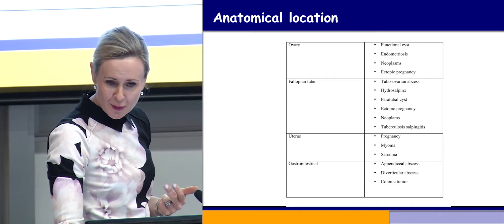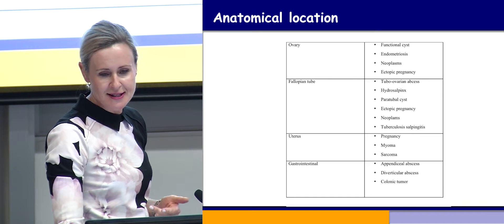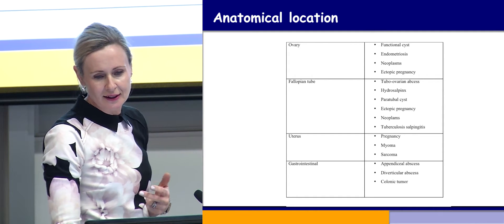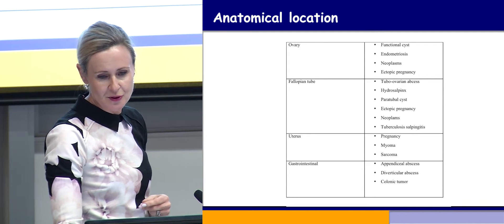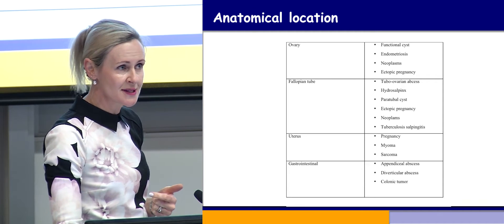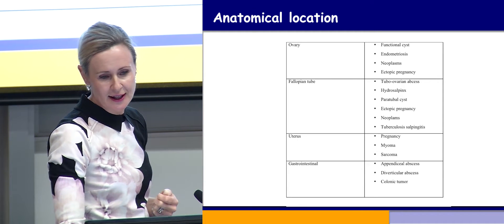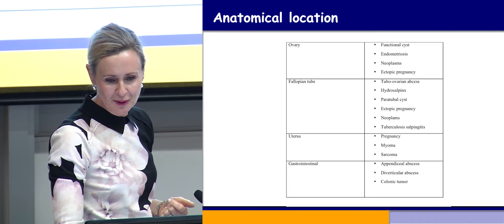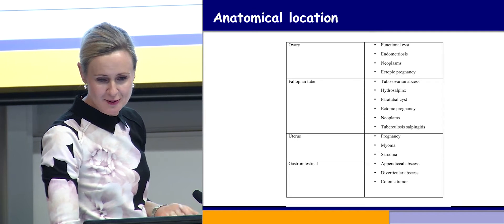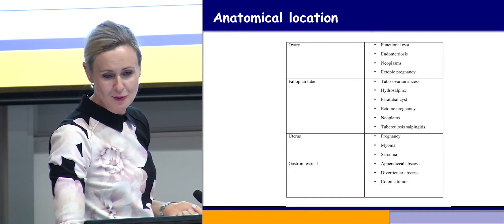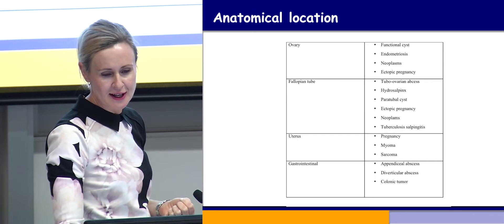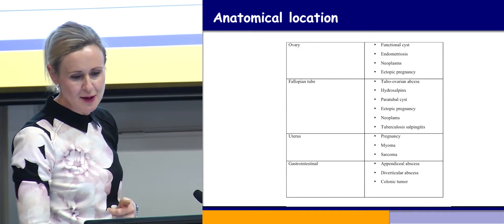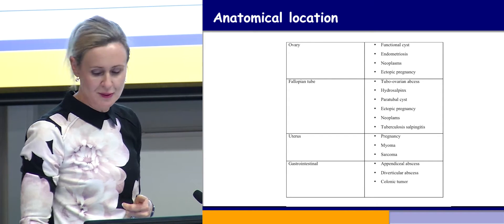In the fallopian tube: ectopic pregnancies, tubo-ovarian abscesses, hydrosalpinx, neoplasms, or tuberculosis, which we still see occasionally. And of course in the uterus you can get pregnancy — not to forget — myomas and sarcomas. And then the gastrointestinal causes, which are different abscesses or tumours.